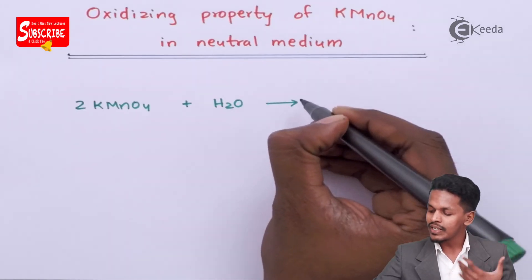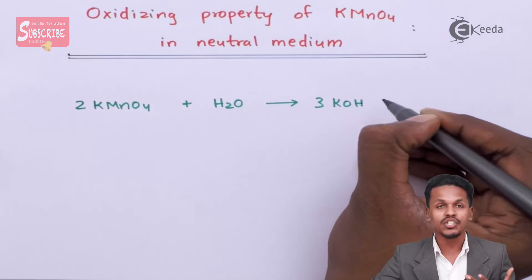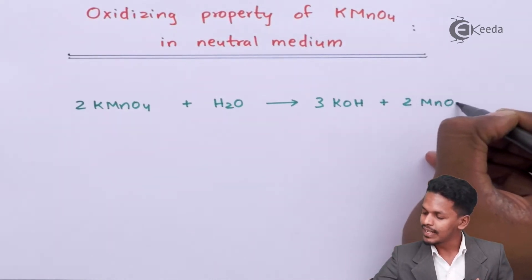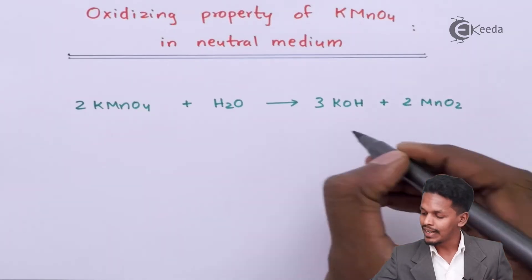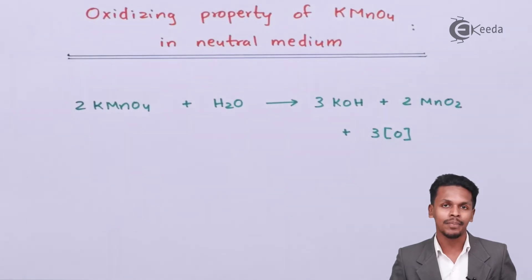Based on that, the following product we could get is 3 moles of KOH, that is potassium hydroxide, along with 2 moles of MnO2, that is manganese dioxide, and this is the main thing: 3 moles of nascent oxygen atom.